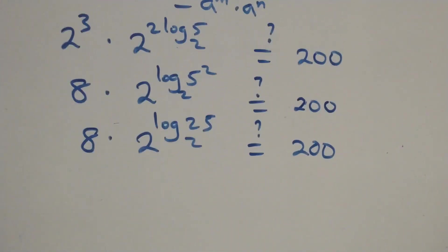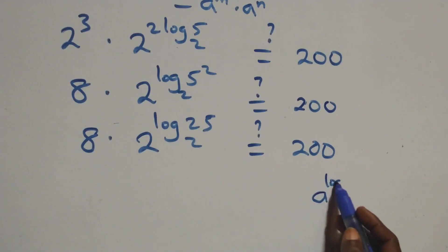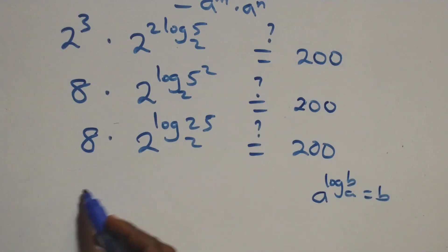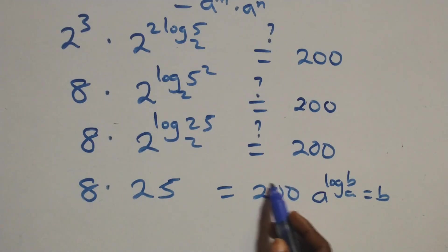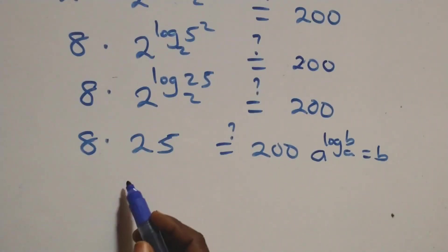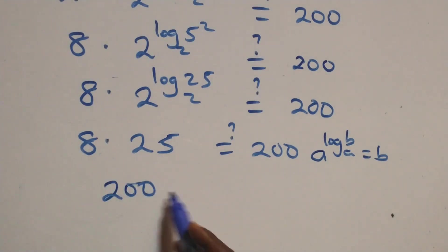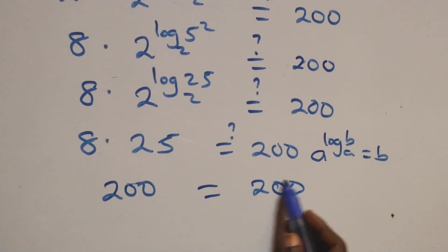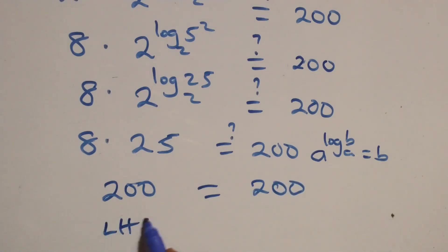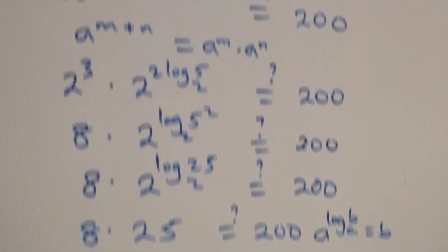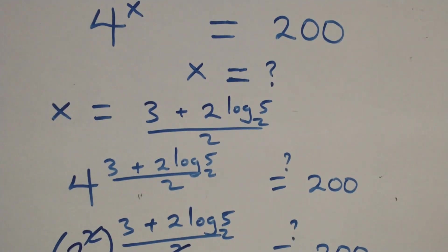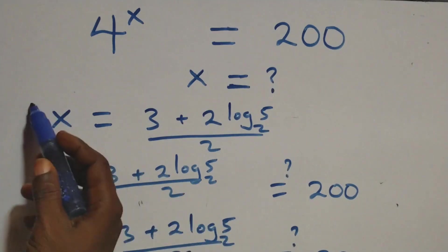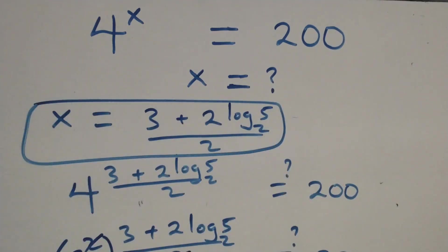This follows the rule where a raised to power log base a of b equals b. So 8 times 25 equals 200, which equals 200 on the right-hand side. The left-hand side equals the right-hand side, and therefore we conclude that x equals (3 + 2 log 5 − 2) / 2 satisfies this given problem.